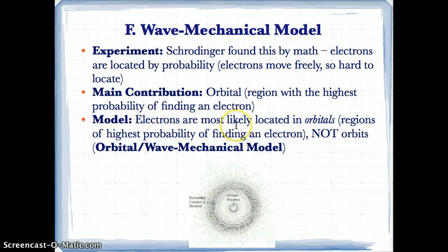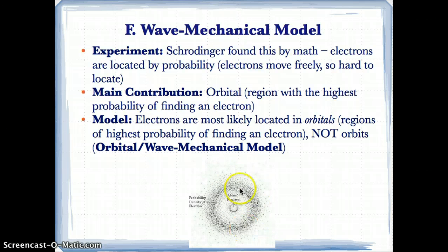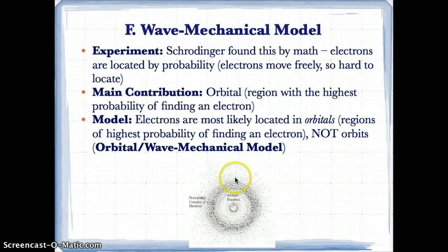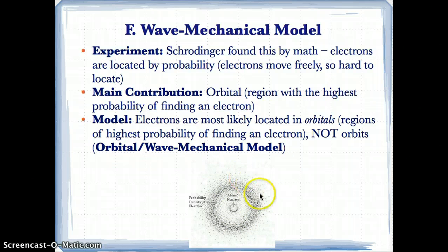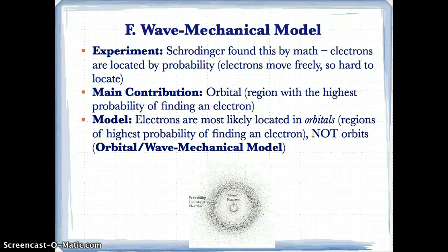According to the wave mechanical model, electrons are most likely located in orbitals — fuzzy regions of space where there is the highest probability of finding an electron. Orbits are fixed circular pathways, while orbitals are regions of probability. This is known as the orbital or wave mechanical model.